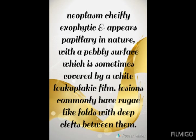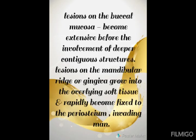Lesions of the buccal mucosa may become quite extensive before involvement of deeper contiguous structures. Lesions of the mandibular ridge or gingiva grow overlying the soft tissue and rapidly become fixed to the periosteum, gradually invading and destroying the mandible.